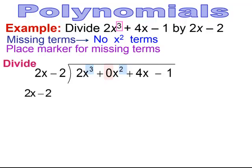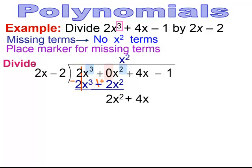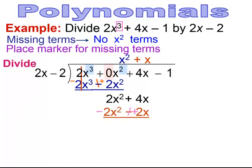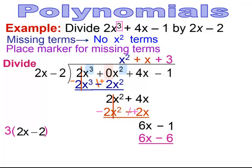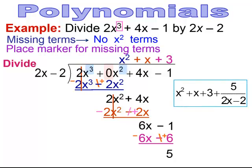Then you'll do long division as normal. I multiply by x squared and get 2x to the third minus 2x. Don't forget to change the signs. The 2x to the third cancels, and you have zero plus two, so you end up with 2x squared. Bring down the next piece, that plus 4x. Multiply by x to get that 2x squared, applying the distributive property. Change the signs and add down — you get 6x. Bring down the minus 1. Multiply by 3 to get 6x, giving 6x minus 6. Change the signs. You get a remainder of 5, which you write as plus 5 over 2x minus 2.